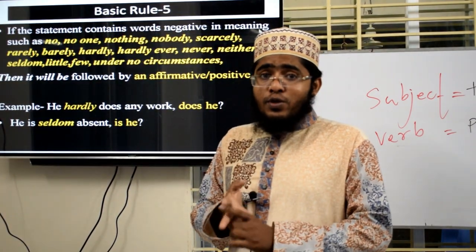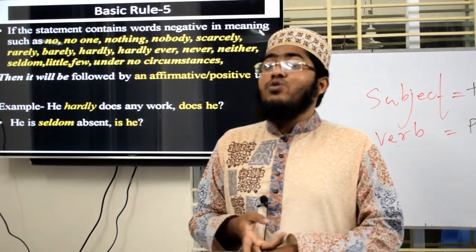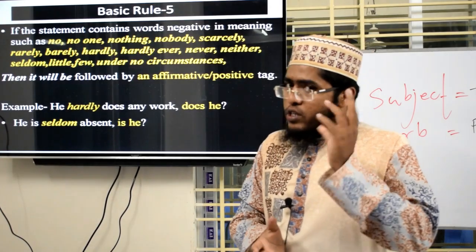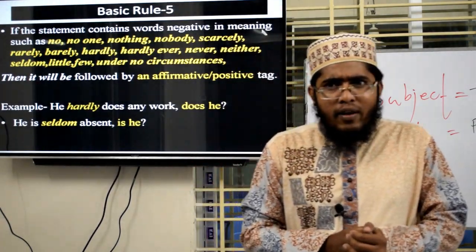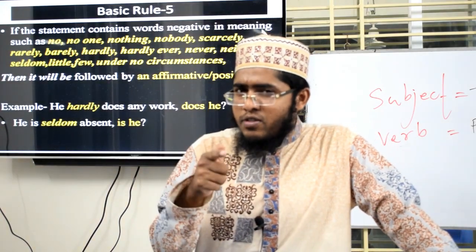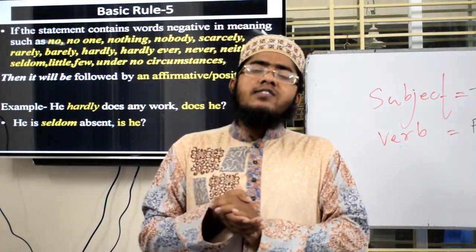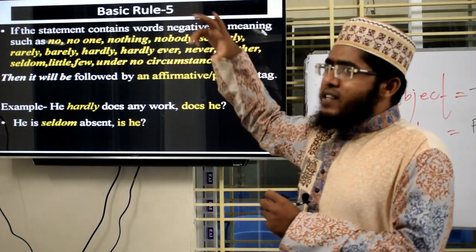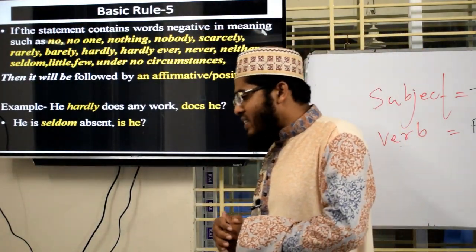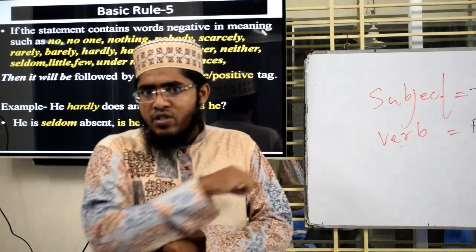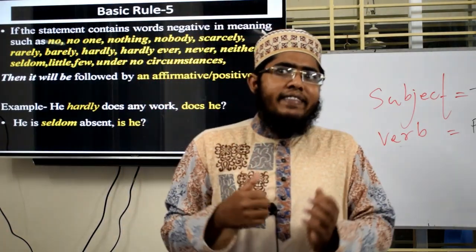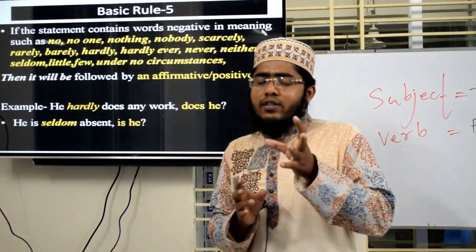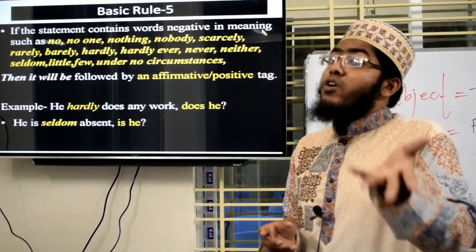We have now solved basic rules 1, 2, 3, 4. Now let's do basic rule 5. Rule 5 is very important. It builds on rules 1 and 2 — positive sentence gets negative tag; negative sentence gets positive tag. But rule 5 adds: if a sentence contains negative words or phrases, we must use a positive interrogative tag, even if the sentence looks structurally positive.